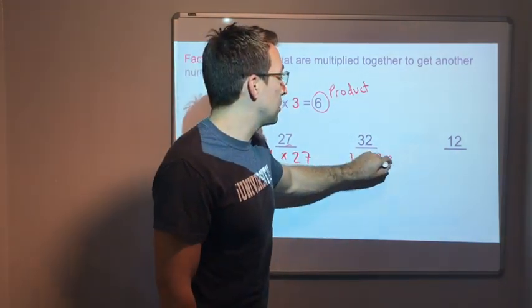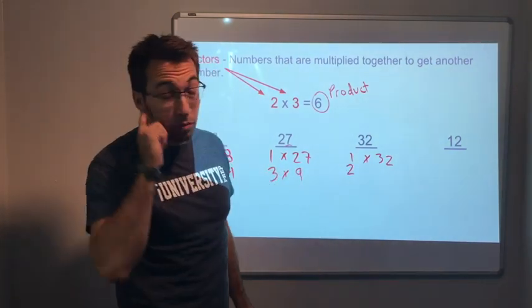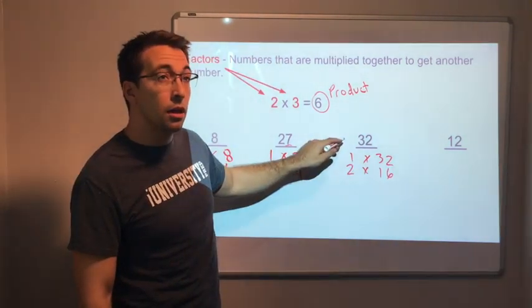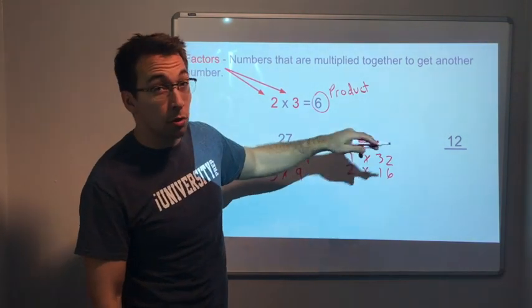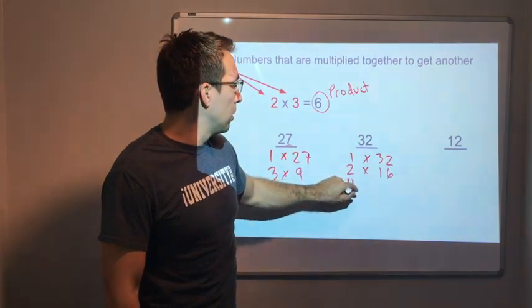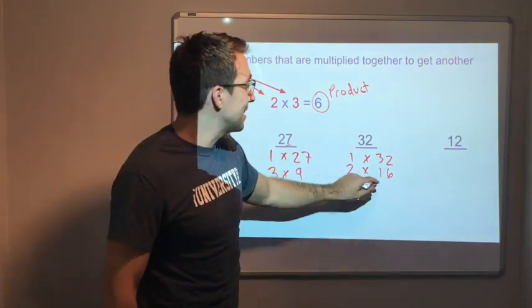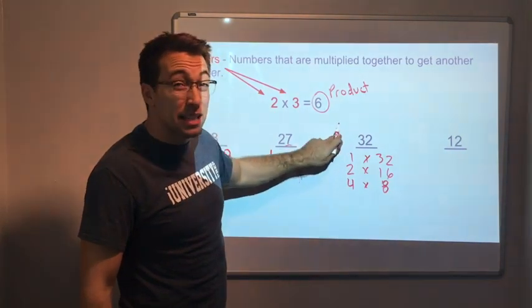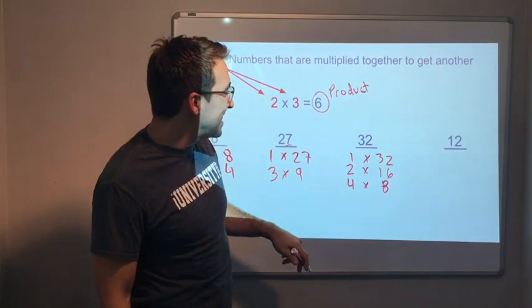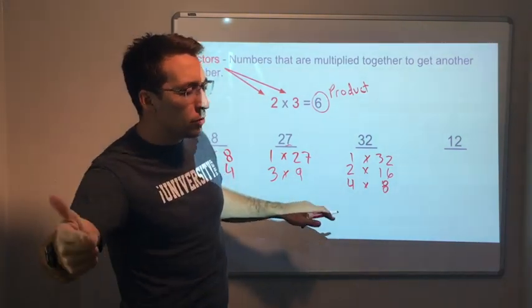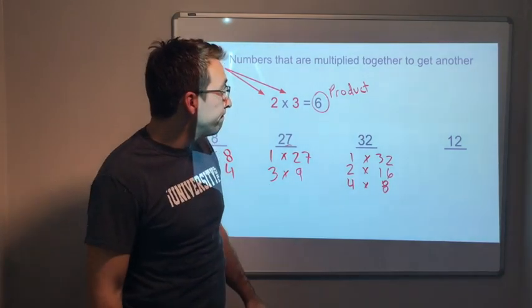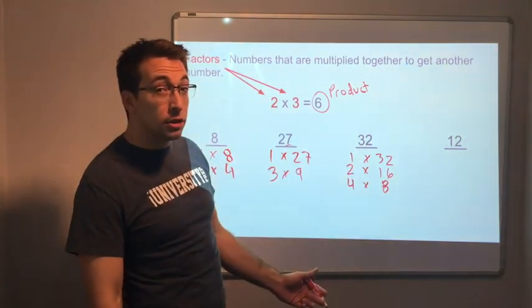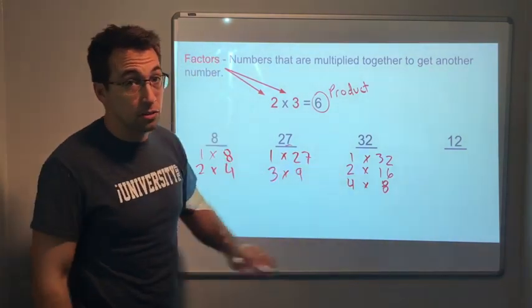1 times 32. Well, it's an even number, so it can be divided by 2. What is 2 times 16? What about 3? Well, 3 times 10 is 30, 3 times 11 is 33, so not 3. What about 4? Yeah, 4 times 8. Mental math, we've got to know this stuff, we've got to have it memorized. 5 times 6 is 30 and 5 times 7 is 35, so it's not 5. What about 6? 6 times 4 is 24, 6 times 5 is 30, 36, nope. 12? 12 times 2 is 24, 12 times 3 is 36, nope, not 12. Here we are, 6 factors go into 32.